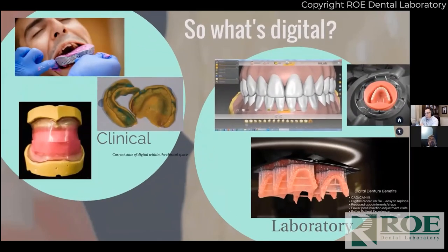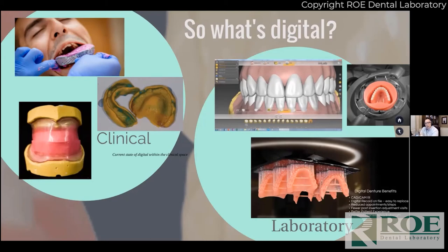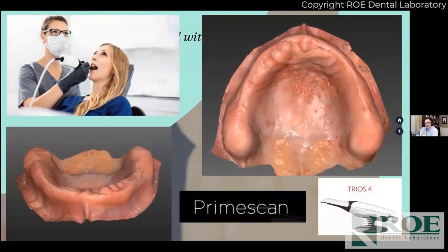A question I get often from dentists is: what's digital for me? The digital part of digital dentures is primarily in the lab. The good news is that if you like the way you're taking impressions and bites, you do not have to change a thing. You can send those same records to the lab and the lab can digitize them for you — you don't have to buy anything or change anything. But we do have technology today that is accurate enough to scan an edentulous arch. It's not a simple scan — it takes practice and learning — but the latest scanners like the Primescan, Trios, and iTero all have the capacity to give you an accurate scan, as confirmed by studies done in the last several years.